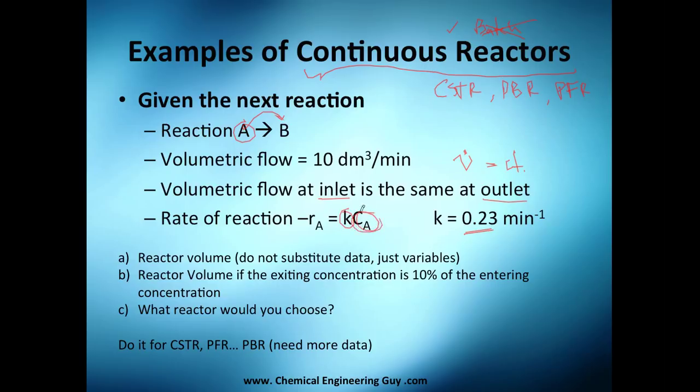They tell you, number or letter A, please give us the reactor volume and do not substitute data, just variables. Once we got that, if the exiting concentration is 10% of the entering concentration, what—well I think you're going to calculate the volume here.